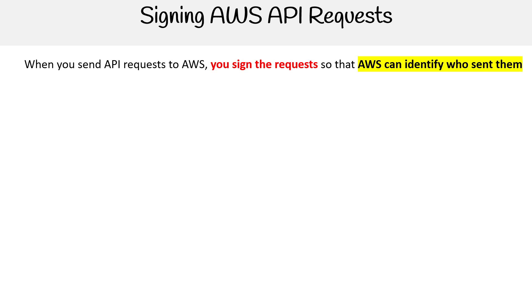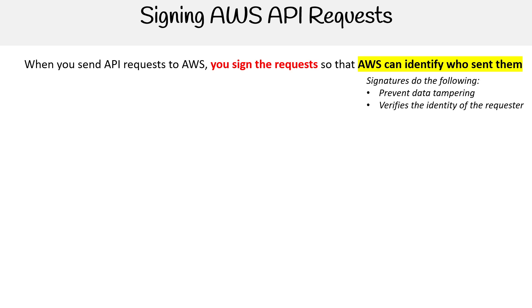When you send an API request to AWS, you have to sign the requests, because that's going to identify who sent the request to AWS. Signatures do two things: they prevent data tampering and verify the identity of the requester.